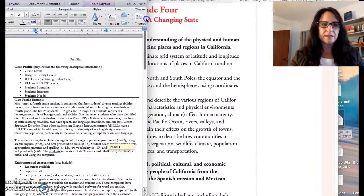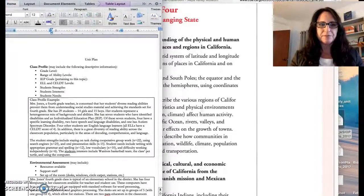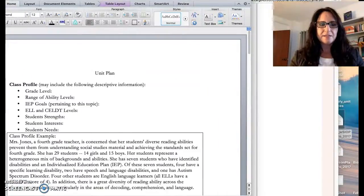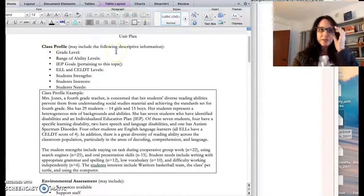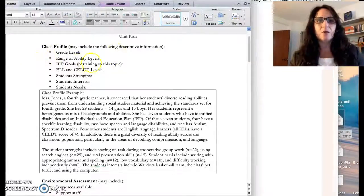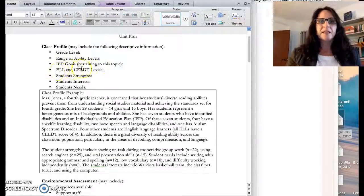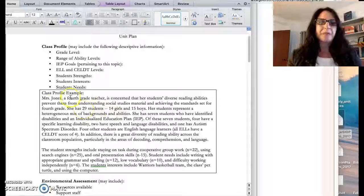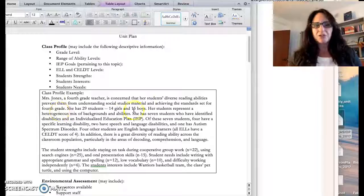I first looked at my class profile. Some of the things that we can look at in a class profile are grade level, range of ability levels, IEP goals pertaining to the topic, ELL and CELDT levels, so what are their CELDT scores, and any student strengths, interests, and needs.